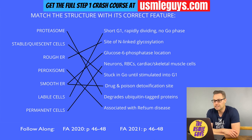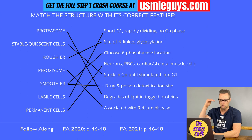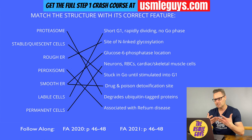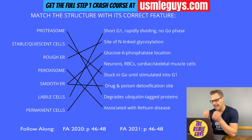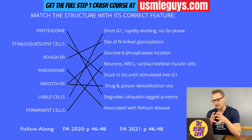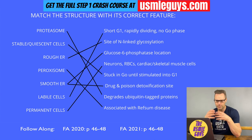Here are the correct answers. Let's start at the top with permanent, stable, and labile cell types. Permanent cell types remain in G0 and don't enter the cell cycle, but rather regenerate from stem cells — think neurologic cells. Stable cells, also known as quiescent cells, remain in G0 until stimulated to enter the cell cycle, at which point they enter G1. Labile cells are your rapidly dividing cells.